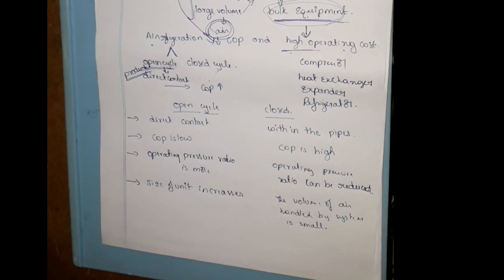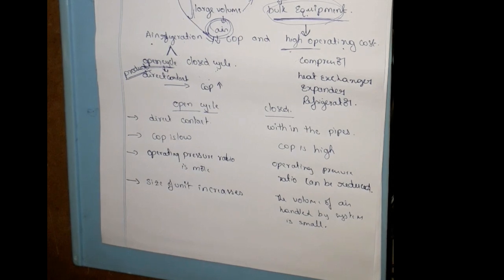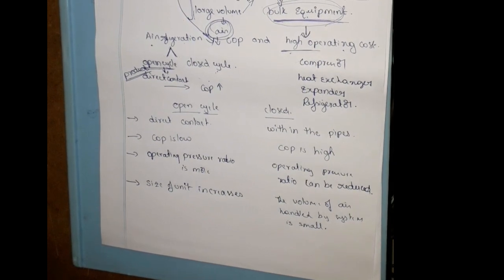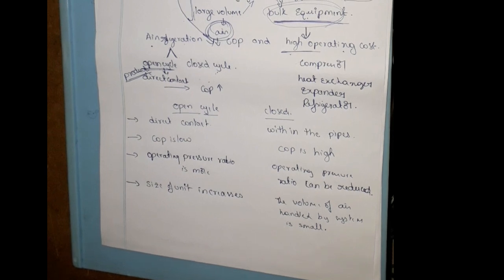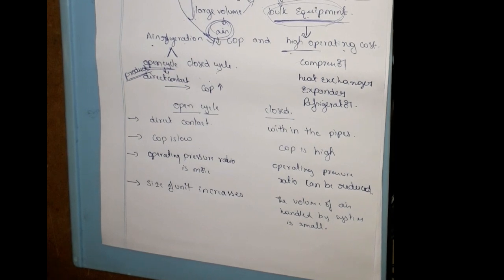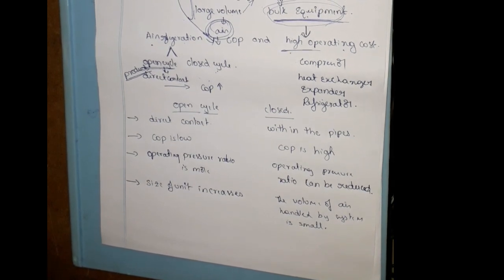Open system, first point: air comes in direct contact with the refrigerated space. Closed system, first point: air gets circulated within the system without coming in direct contact with the refrigerated space. Second point: in open system, the pressure of the air is atmospheric in the refrigerated space; in closed system, the air is dense. Third point: in open system, the volume of air handled by the compressor and expander is large, and thereby the size of the unit increases; in closed system, the volume of air handled is small. Fourth point: COP is low in open system, COP is high in closed system. Operating pressure ratio is more in open system; in closed system, the operating pressure ratio can be reduced.